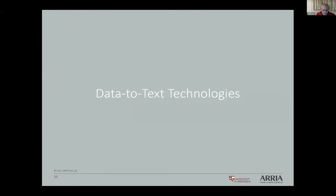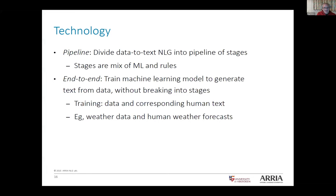Let me say a little about the technology. At a high level there are two ways of doing data-to-text. One way uses a pipeline of stages — we break the process into different stages and go through them one by one, each using machine learning, rules, or a mixture. The other approach is end-to-end, where you take a machine learning model — a transformer or similar — and train it directly. You provide the weather data and the human-written weather forecast, then fine-tune a model or use a prompting approach to go from data to text with no intermediate stages.